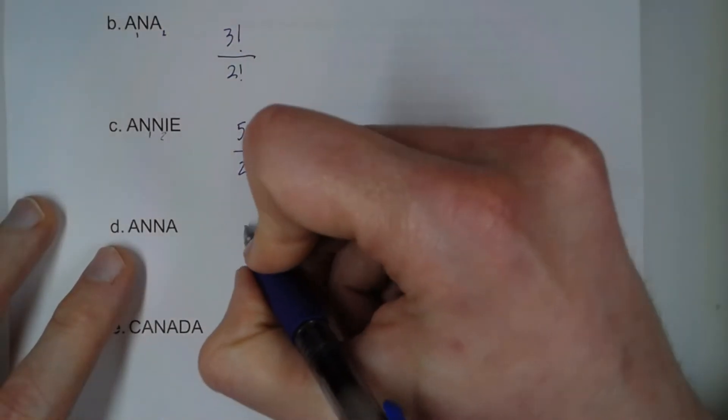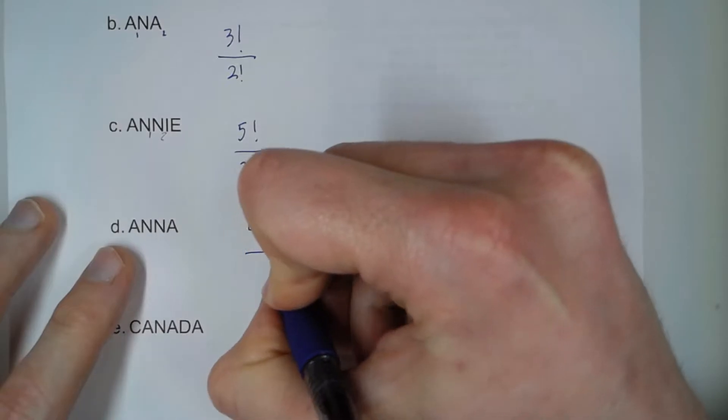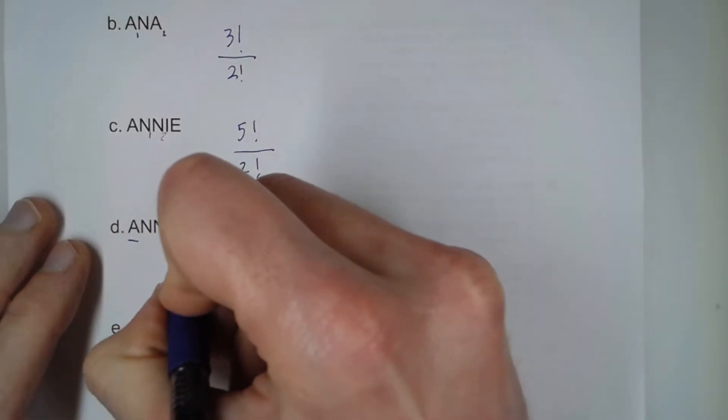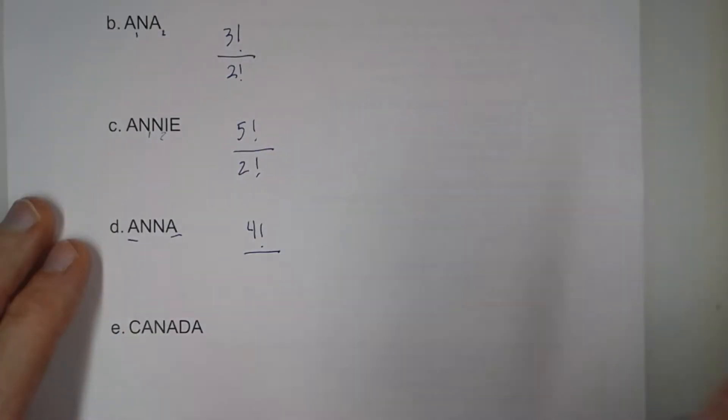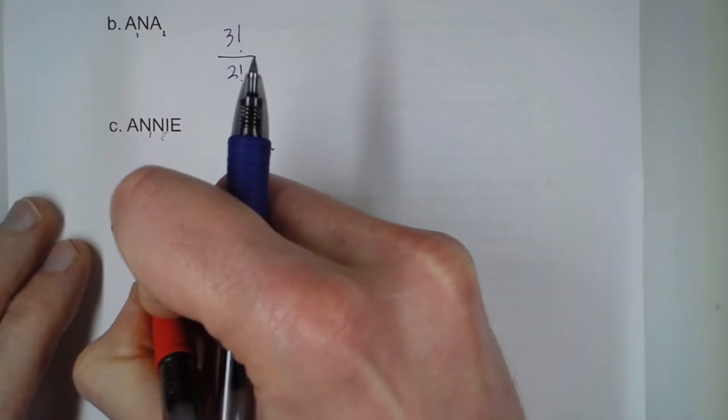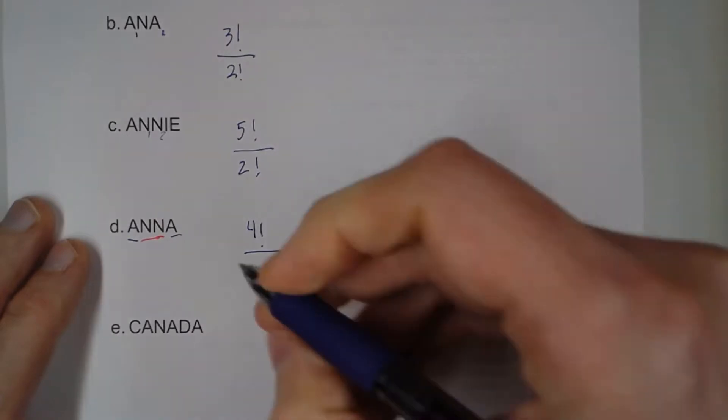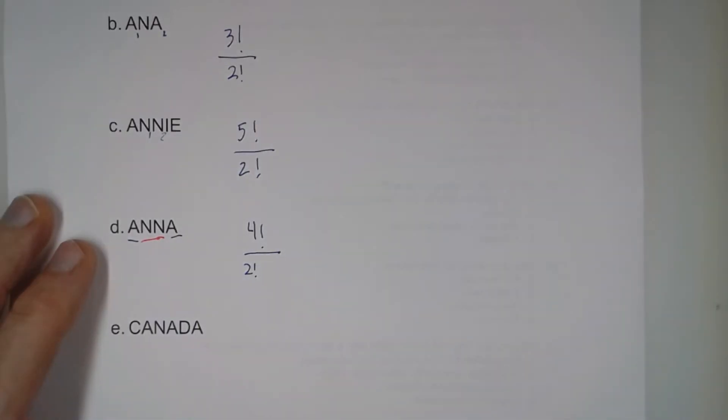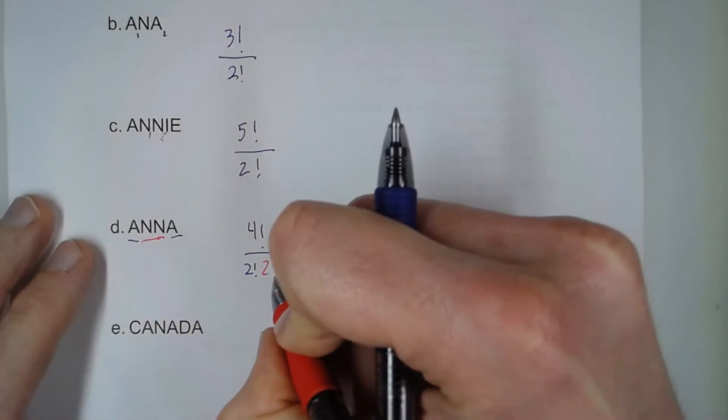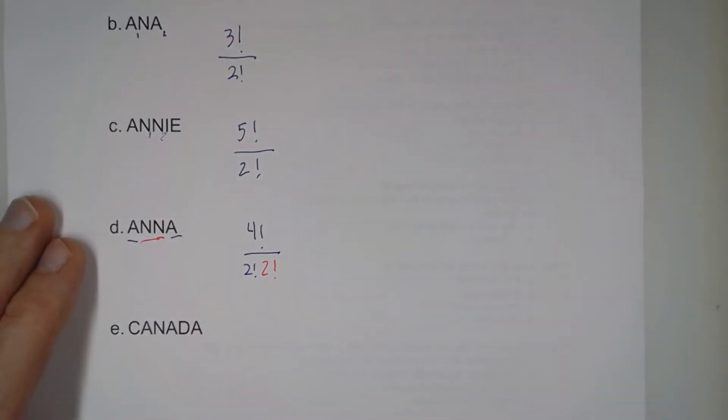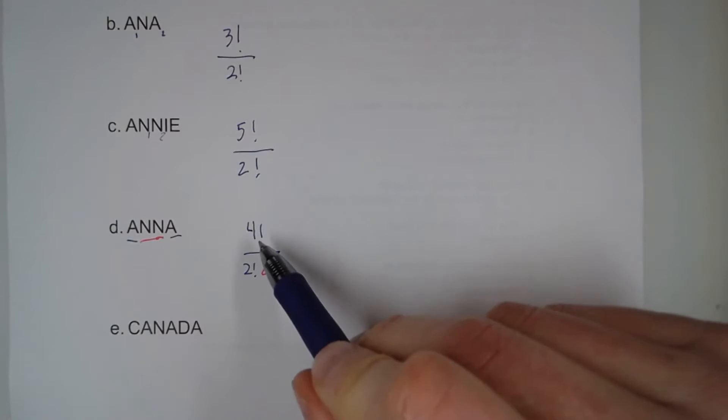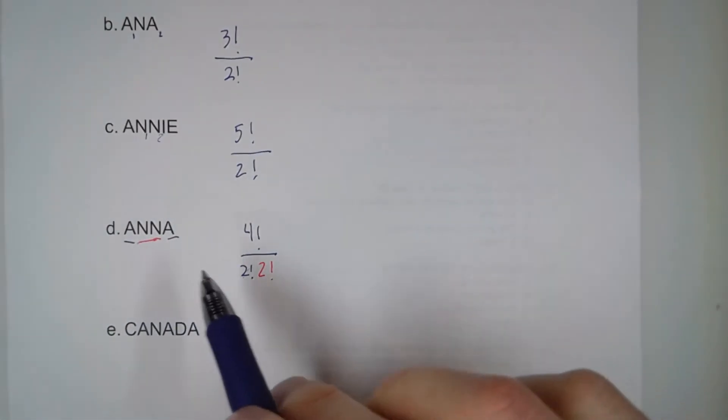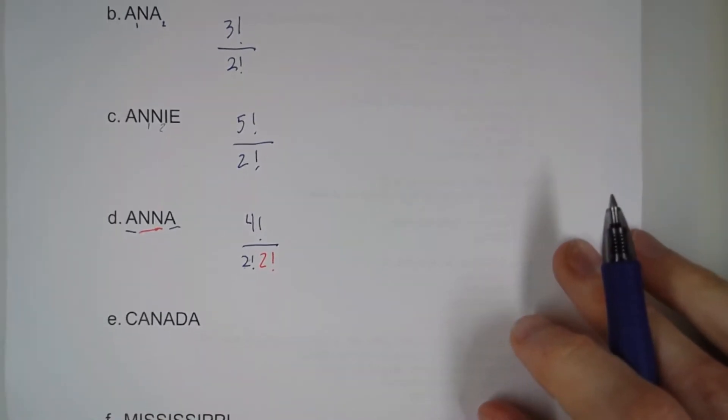Letter D, we have four letters, so it's four factorial. Now, what's important here is that we have not only two A's, but also two N's. So that means there's two factorial ways to rearrange the A's, and there's also two factorial ways to rearrange the N's. So that means we take the four factorial and divide by two factorial for the A's, and two factorial for the N's.